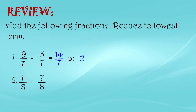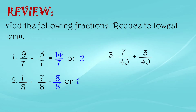Number 2: 1/8 plus 7 over 8. We just add the numerators: 1 plus 7 equals 8, and copy the denominator which is 8. So 8 over 8 simplifies to 1. Number 3: 7 over 40 plus 3 over 40. The denominator here is a bit larger.